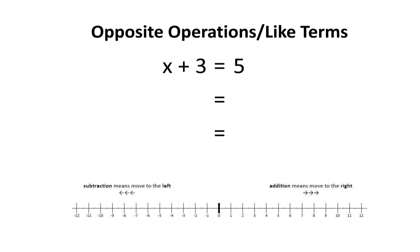This method involves opposite operations and identifying like terms. This will be useful when you're dealing with unfriendly numbers. Take a look at the equation x plus 3 equals 5. You'll notice that these two terms are alike, since they're both numbers. That makes them like terms.